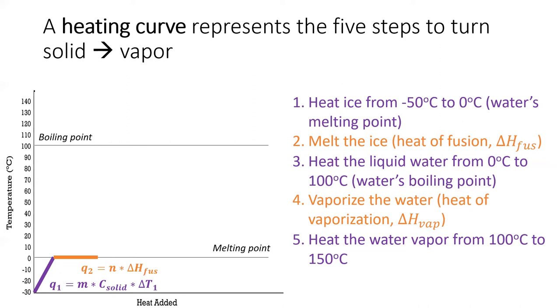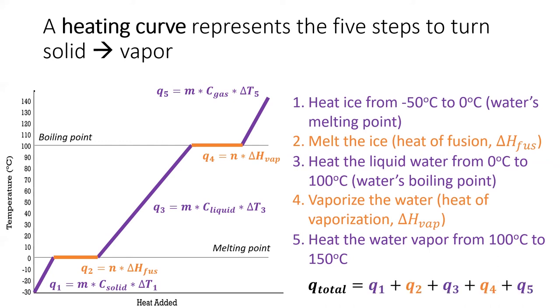The second step melts the ice, but there is no temperature change. To calculate the energy needed to melt the ice, we'll multiply the moles of water times its enthalpy of fusion. The third step heats the liquid water to its boiling point using q equals mc delta t. The fourth step vaporizes the water using water's enthalpy of vaporization. The last step is another q equals mc delta t calculation to bring water vapor up to its final temperature. The total energy change of this process will equal the sum of the energy changes of the five individual steps.